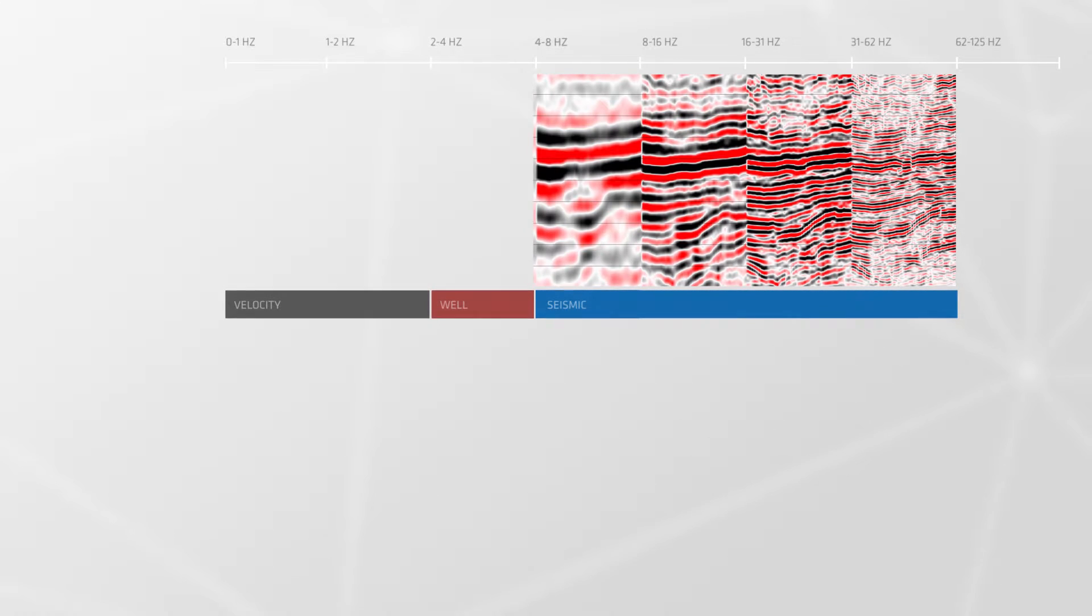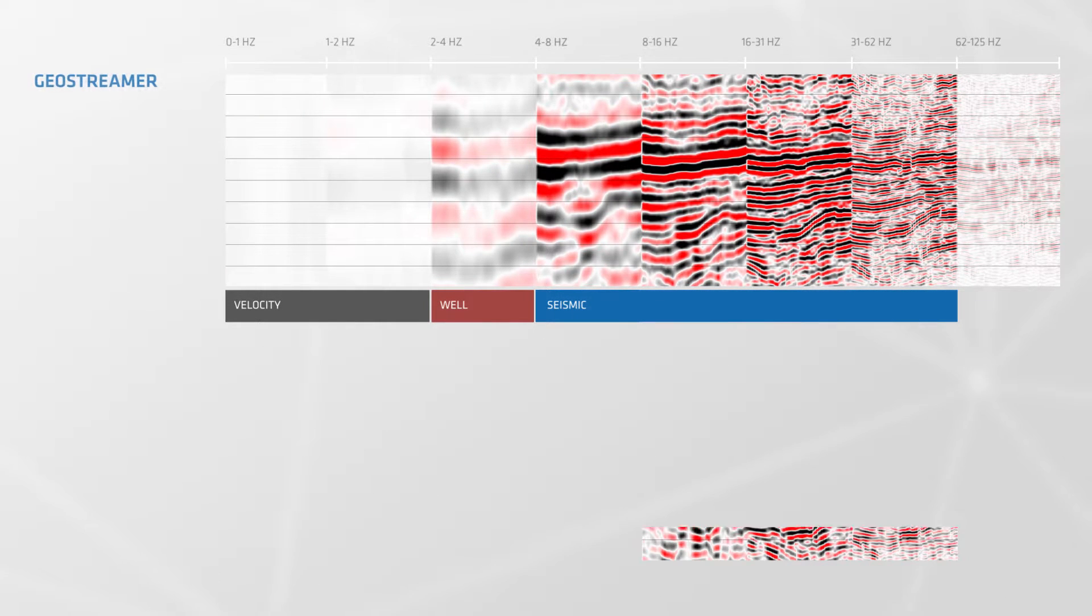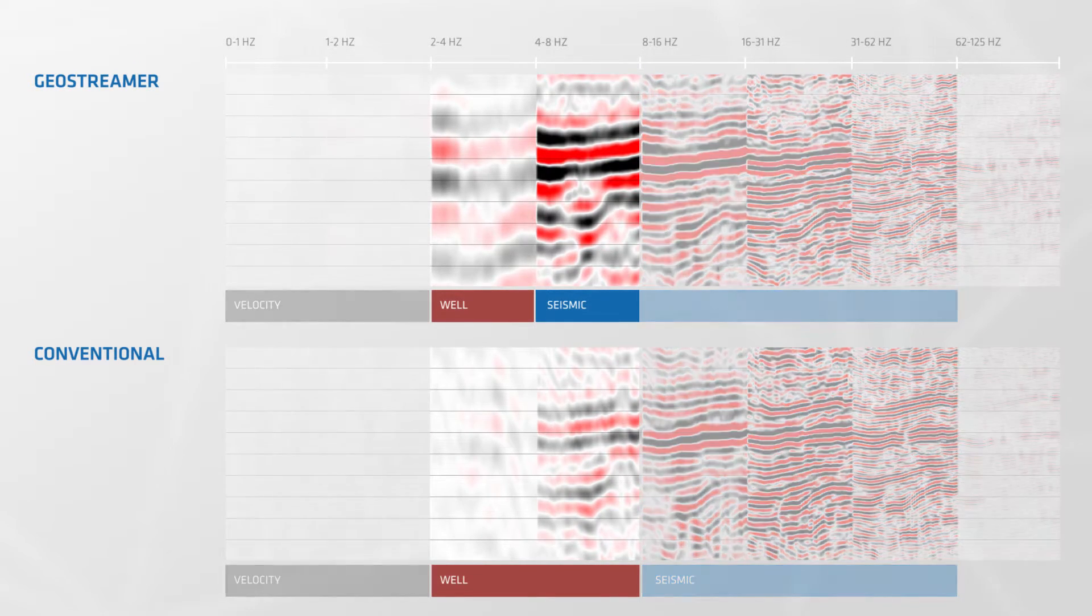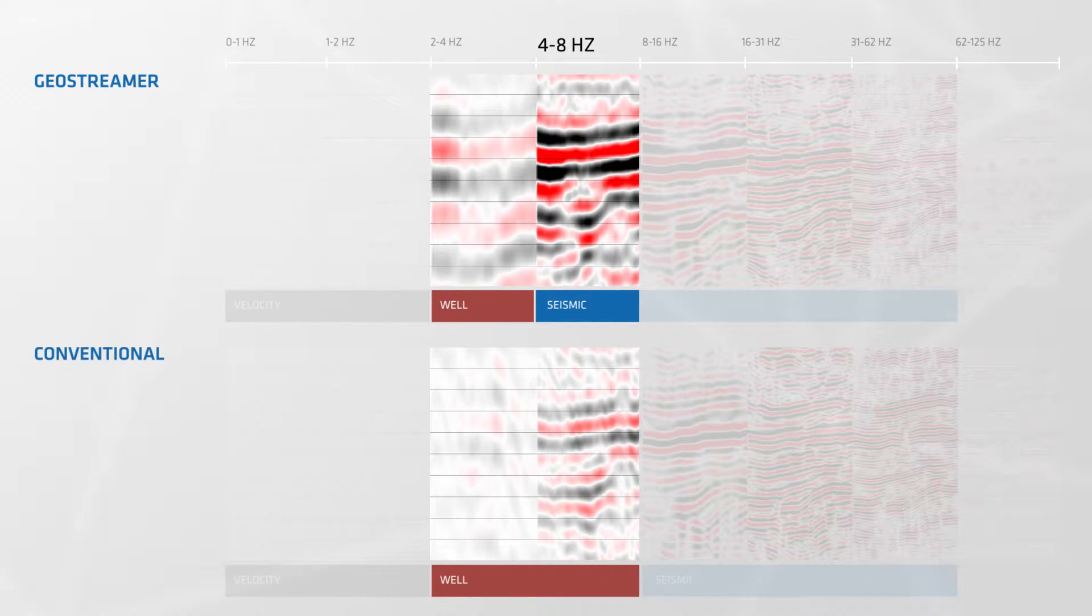Filter panels at the reservoir level clearly show substantially more low-frequency information contained in geostreamer data at the ultra-low frequency end between 4 and 8 Hz. This additional low-frequency information reduces the need for well information significantly.